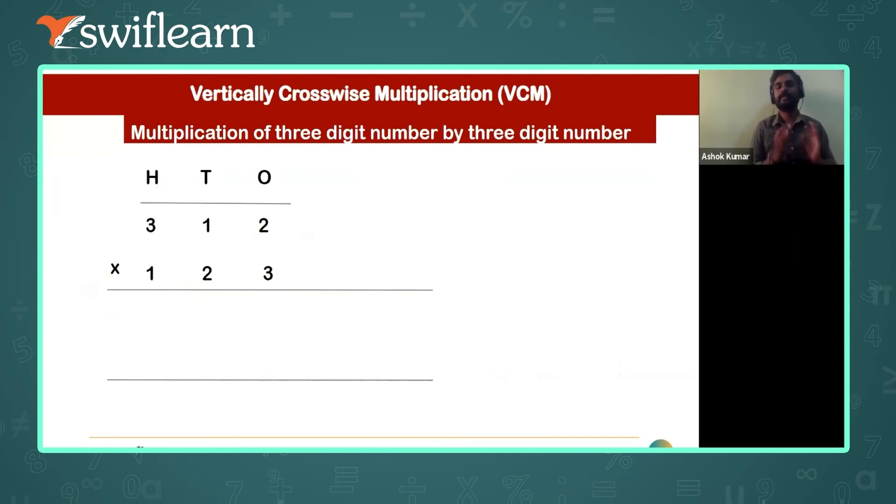So use VCM in order to solve this problem: 312 into 123. Use the same five steps to solve the problem.